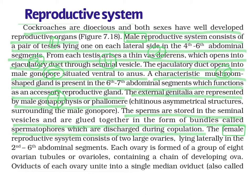Now let us discuss the male reproductive system. It consists of a pair of testes, which lie one on each lateral side in the fourth, fifth, and sixth abdominal segments. From each testis arises a thin vasa deferens, which opens into the ejaculatory duct through the seminal vesicle. The seminal vesicle is an accessory gland-like structure that assists the process of reproduction. The ejaculatory ducts open into the male gonopore, which is situated ventral to the anus, near the tenth abdominal segment.